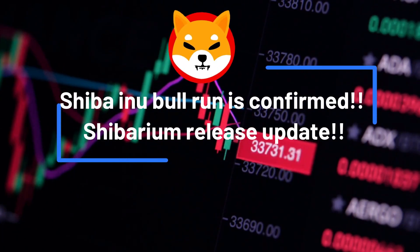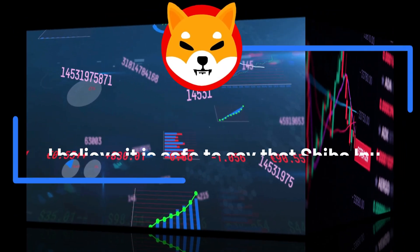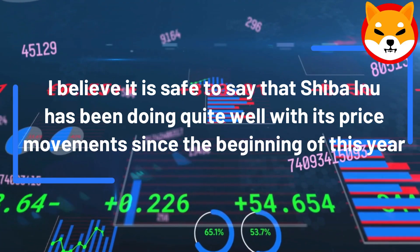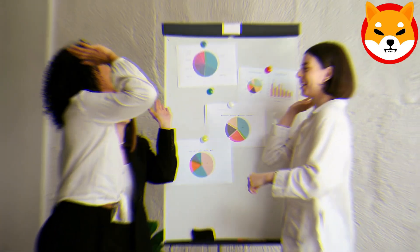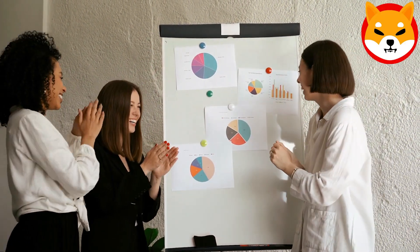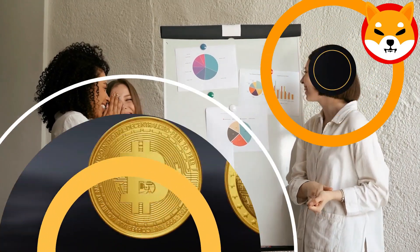Shiba Inu bull run is confirmed. Shibarium release update. I believe it is safe to say that Shiba Inu has been doing quite well with its price movement since the beginning of this year. However, the token has been lacking a big force to send it into a bull run. But it looks like things are starting to change and that big force might be just around the corner.